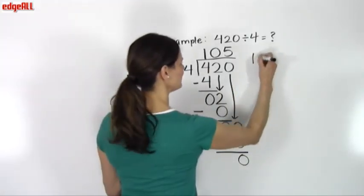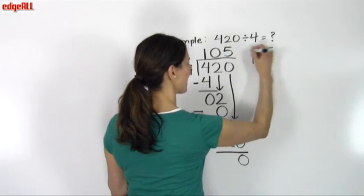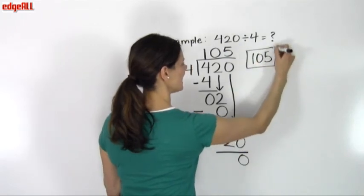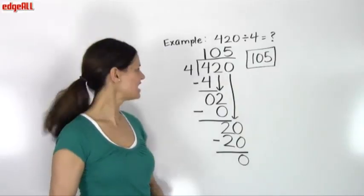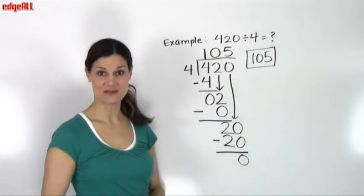This is an example. My answer is 105 with no remainder. This is a really good example of working out a problem in which I have a 0 in my quotient.